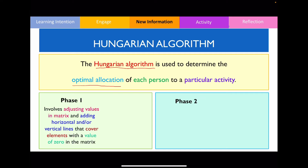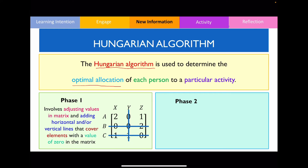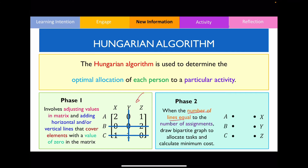In the first phase, we adjust values in the matrix and then add horizontal or vertical lines that cover all elements with a value of zero. We try to cover all of the zeros using the minimum number of lines. We can move into the second phase when the number of lines equals the number of assignments needed. Once these numbers match, we draw our bipartite graph and allocate tasks to find the minimum cost or time to complete all jobs.